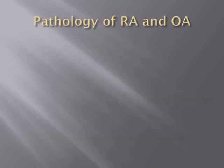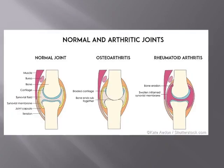Looking at the pathology, we can see three joints illustrated: a normal joint showing synovial fluid, normal cartilage, and bones. In osteoarthritis, the cartilage is very thinned, especially at the edges of bones, so the bones articulate against each other. In rheumatoid arthritis, the cartilage is relatively spared, but there is bone erosion, swelling, and an inflamed synovial membrane — that is why the joint is very inflamed and swollen.